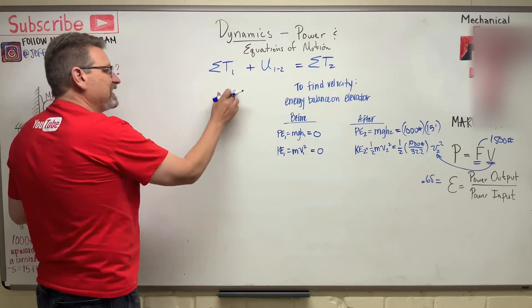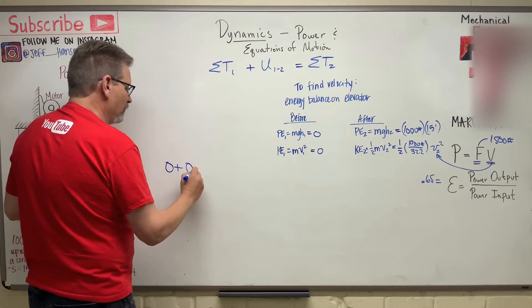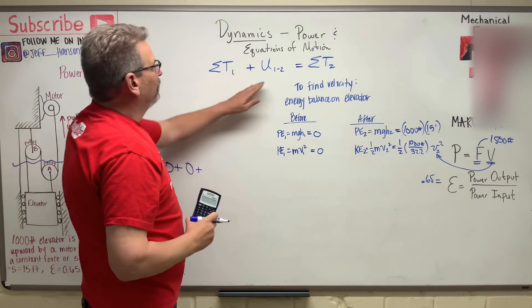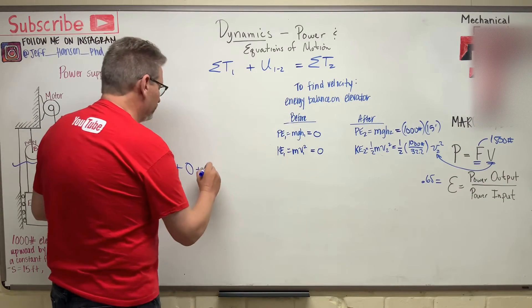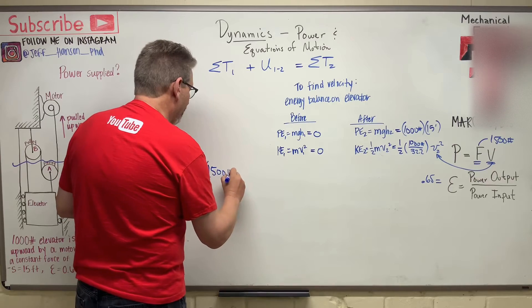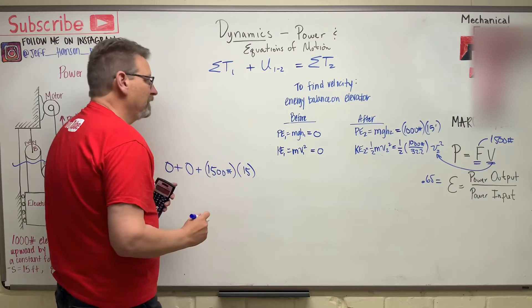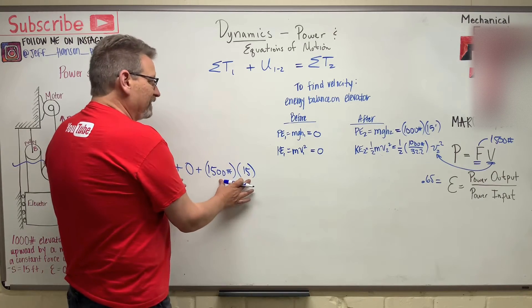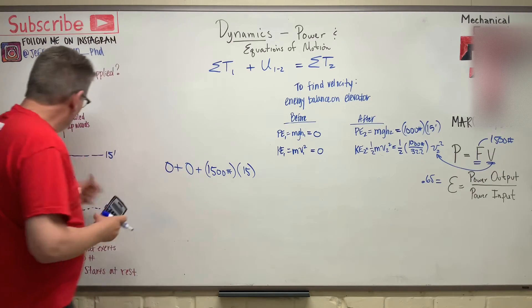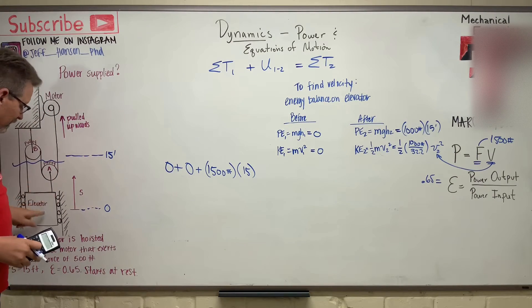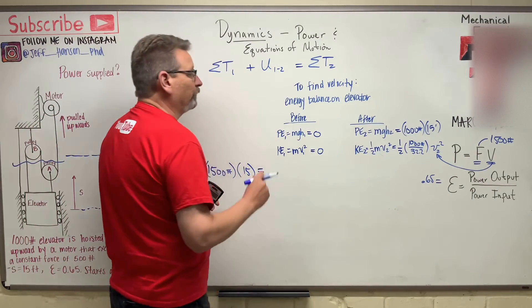So the sum of the t's before is this plus that. Well, that's easy, isn't it? I can do it in my head. Zero plus zero, plus the work. So the work is the force, which we found was 1,500 pounds, times the distance that it moves, which is 15 feet. So that's the work that's done on it, and it's positive because that work is done in the direction of motion. The force was upwards, the elevator moved upwards, so that work is positive, is equal to